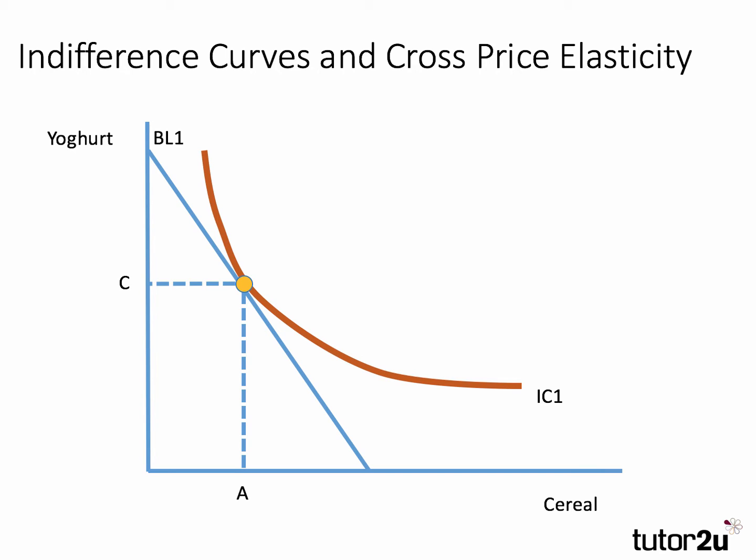Here's an initial scenario: we've got the quantity of yogurt consumed on the y-axis and the quantity of cereal bought on the x-axis. We start with an initial equilibrium, which is the point of tangency between budget line BL1 and the highest attainable indifference curve IC1. At that equilibrium the consumer chooses to purchase C amount of yogurt and A amount of cereal.